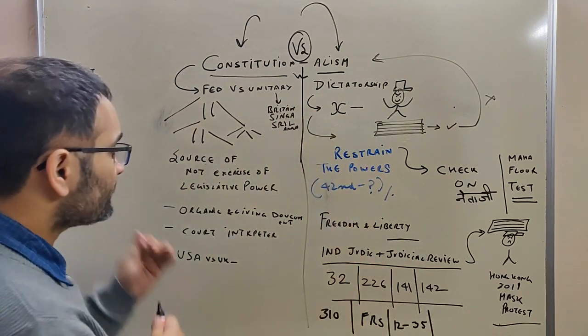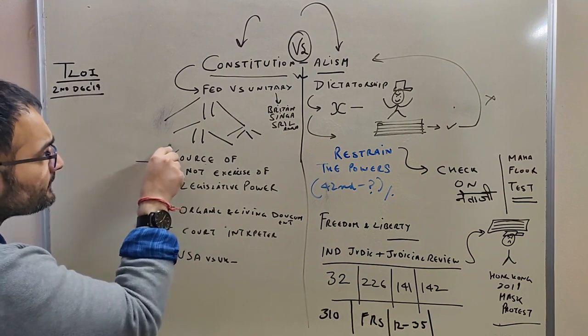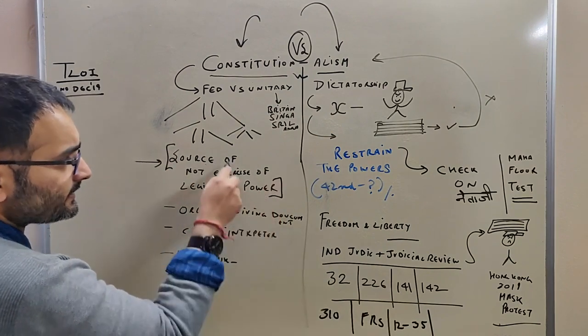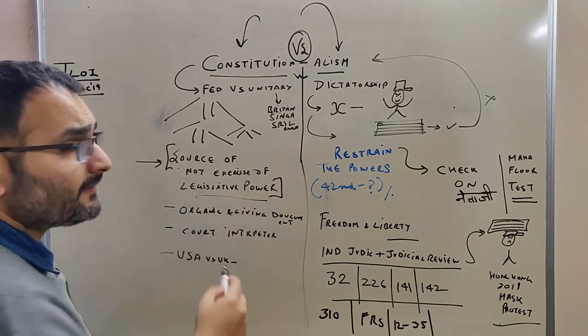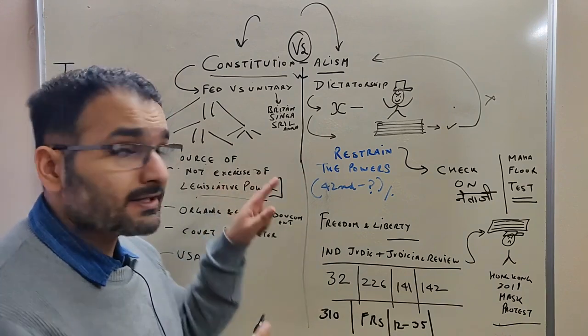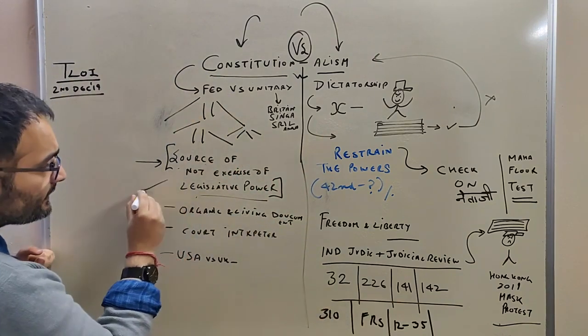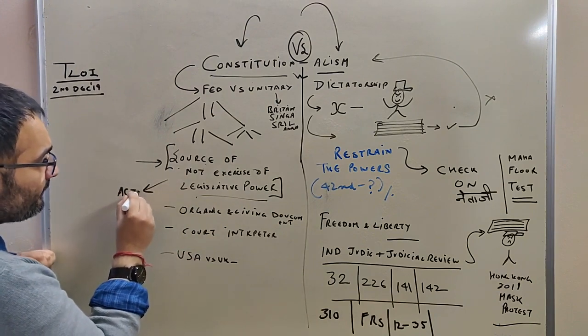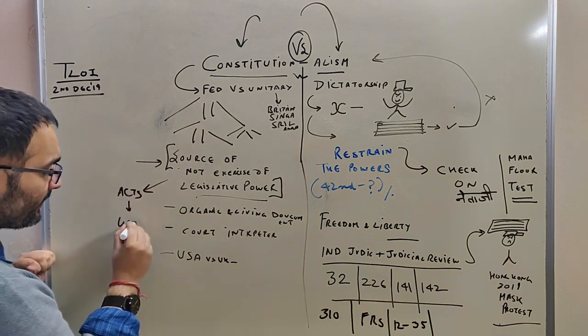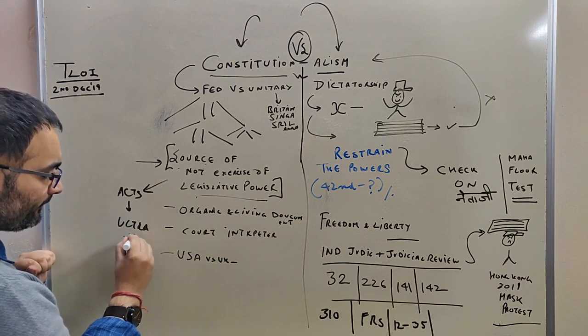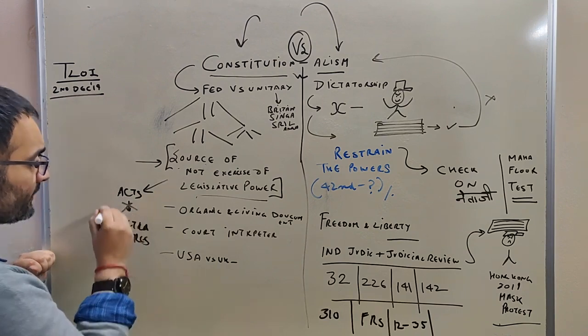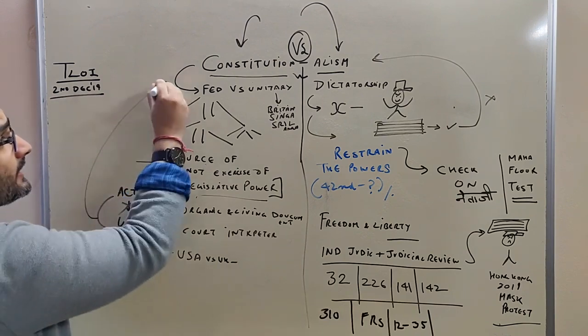So Constitution, please mention this sentence: it is a source of legislative power but not an exercise of legislative power. Because how do you exercise legislative power? That is when you make acts which are not ultra vires—they should not be beyond the power of the Constitution.